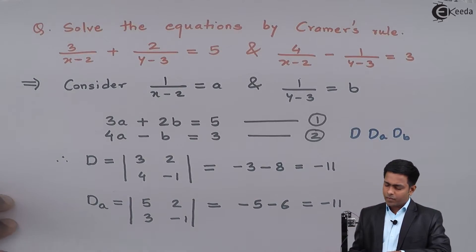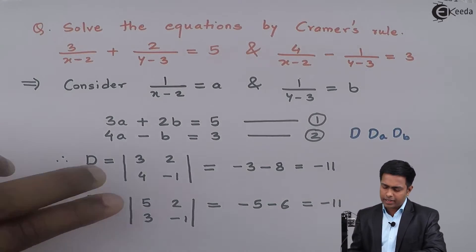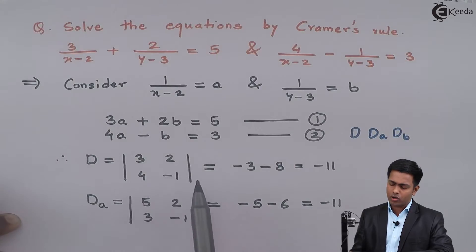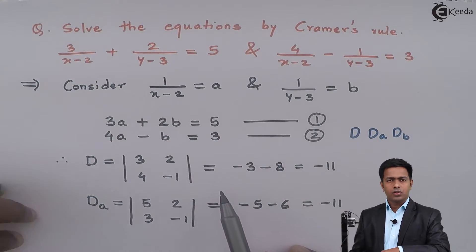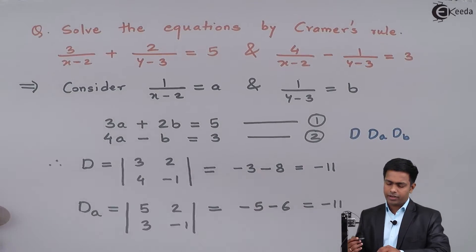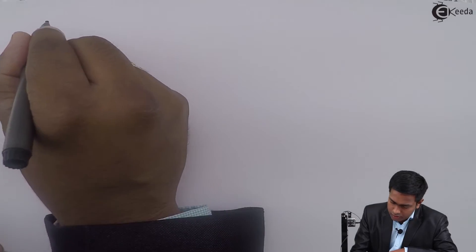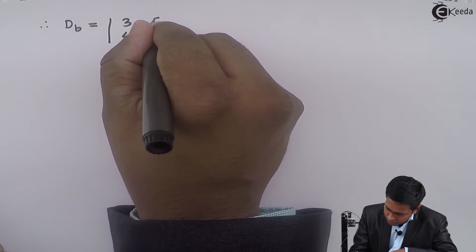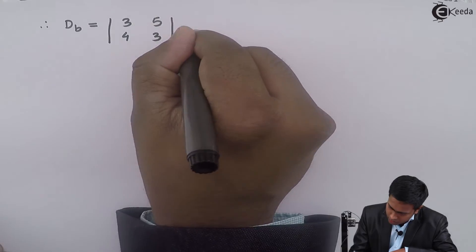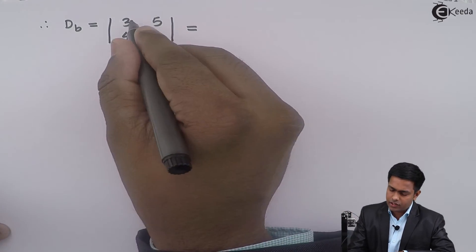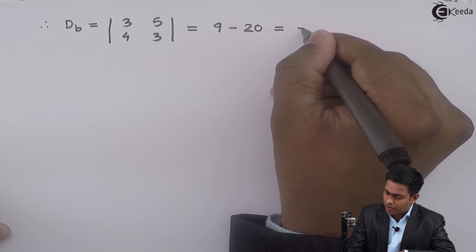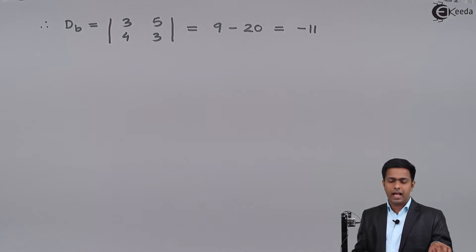Next, let us find out DB. Using the same trick, I will hide the elements of B — that is 2 and minus 1 — and replace them with the constants. So my first column remains 3 and 4, and instead of 2 and minus 1, I replace with 5 and 3. So DB equals the determinant of [3, 4; 5, 3], which gives 3 into 3 that is 9, minus 5 into 4 that is 20. So 9 minus 20 gives minus 11.